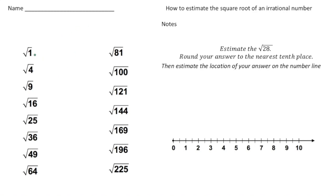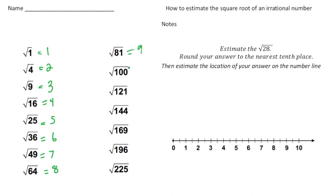For example, the square root of 1 is 1, because 1 times 1 is 1. The square root of 4 is 2, because 2 times 2 is 4. The square root of 9 is 3. The square root of 16 is 4. The square root of 25 is 5. The square root of 36 is 6. The square root of 49 is 7. The square root of 64 is 8. The square root of 81 is 9. The square root of 100 is 10.